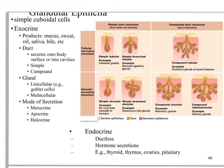I want to make sure that everybody starts memorizing the differences between exocrine glands versus endocrine glands. You've got three things. Endocrine glands have no duct, and they secrete hormones. Exocrine glands have a duct, and they do not secrete hormones — they secrete mucus, sweat, oil, saliva, and other things.